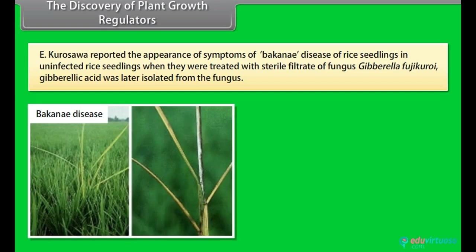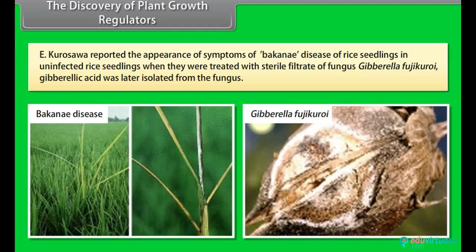E. Kurosawa reported the appearance of symptoms of bakanae disease of rice seedlings in uninfected rice seedlings when they were treated with sterile filtrate of fungus Gibberella fujikuroi. Gibberellic acid was later isolated from the fungus.